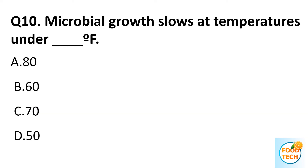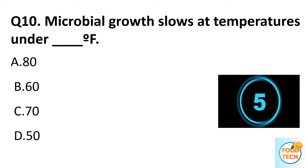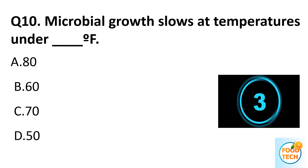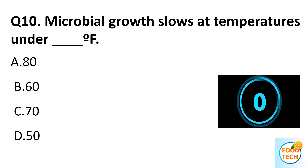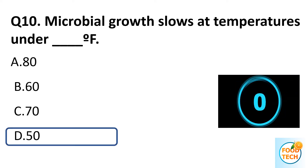Question 10. Microbial growth slows at temperatures under dash Fahrenheit. A. 80. B. 16. C. 17. D. 15. Answer D. 15.